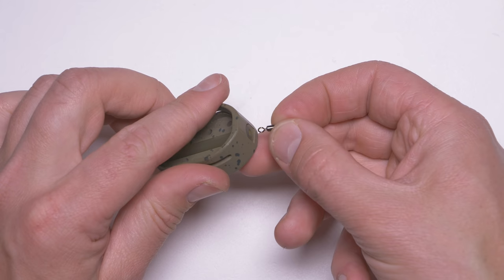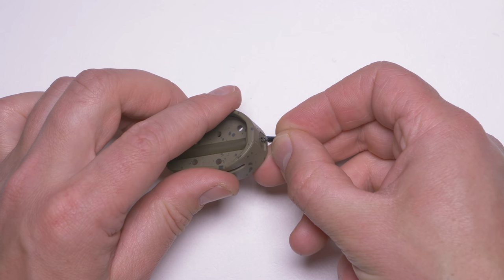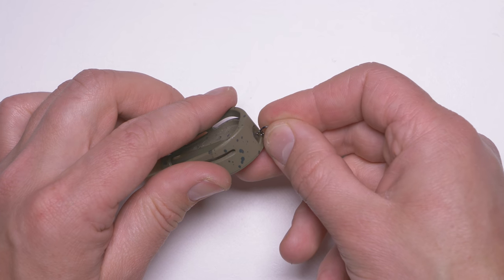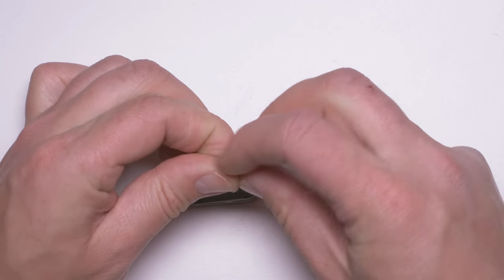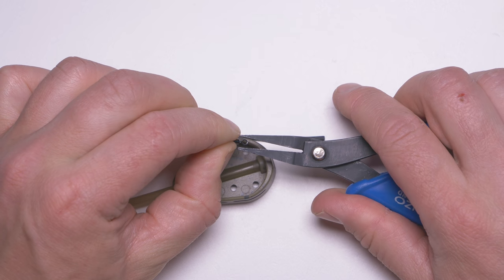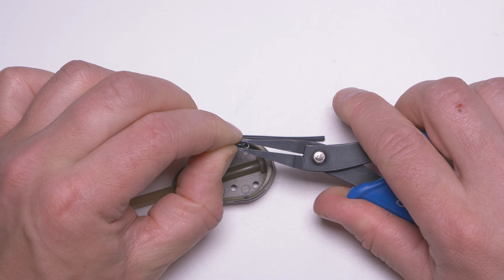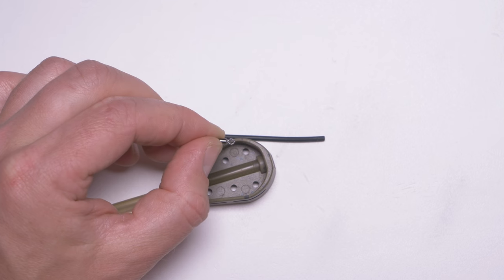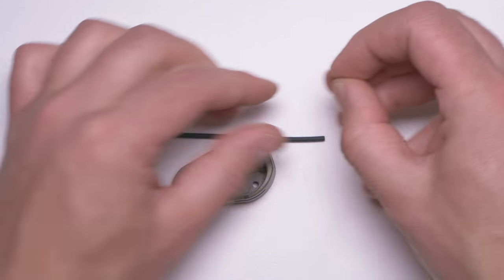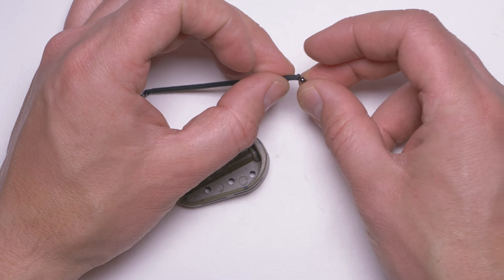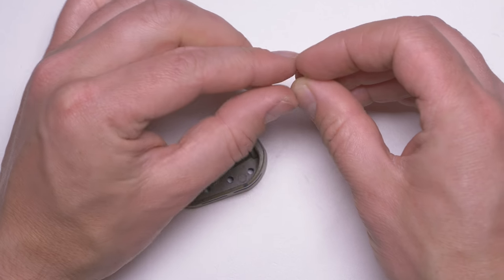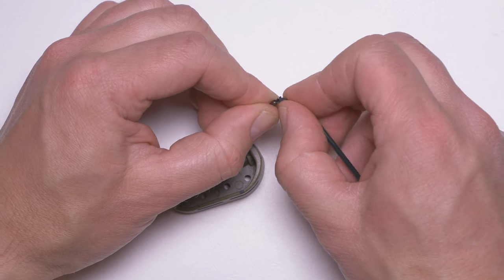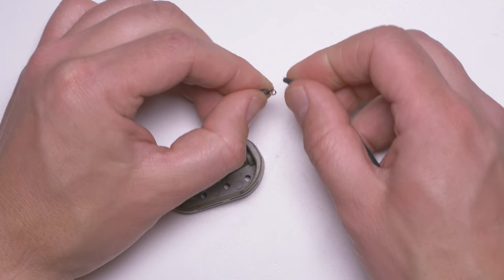If the eye of the swivel would be in the way and the swivel wouldn't go fully inside the feeder, all I would need to do is just squeeze it a little bit, not much, just a little bit using a pair of pliers. Now we can safely attach our elastic onto the swivel.